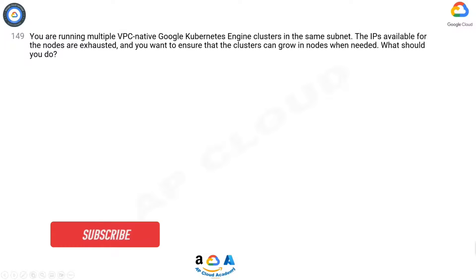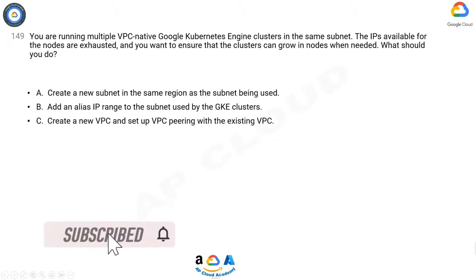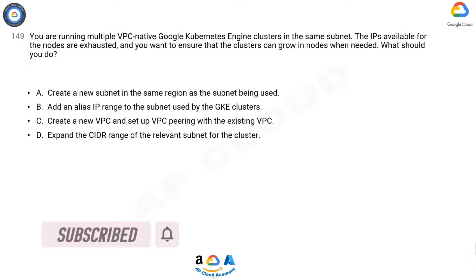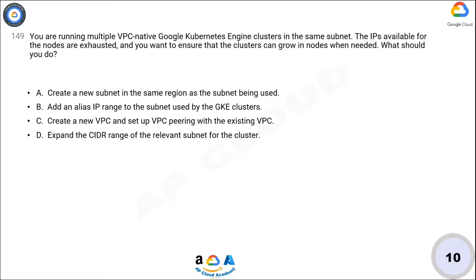A) Create a new subnet in the same region as the subnet being used. B) Add an alias IP range to the subnet used by the GKE clusters. C) Create a new VPC and set up VPC peering with the existing VPC. D) Expand the CIDR range of the relevant subnet for the cluster. Now take 10 seconds to think about the answer.